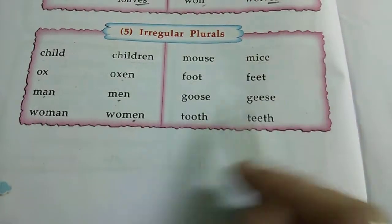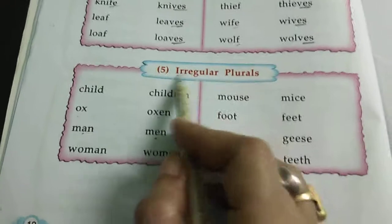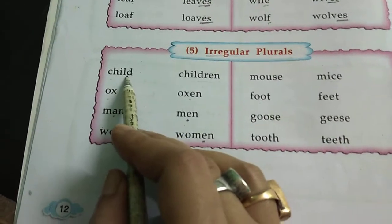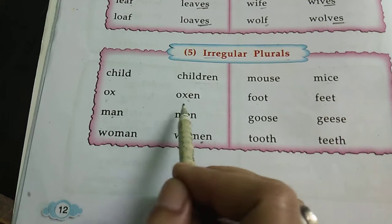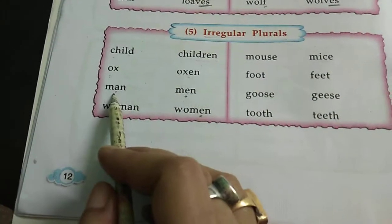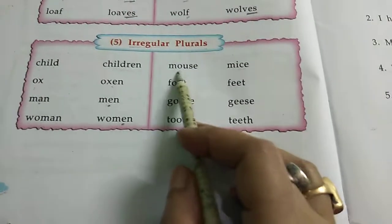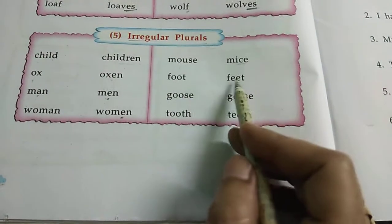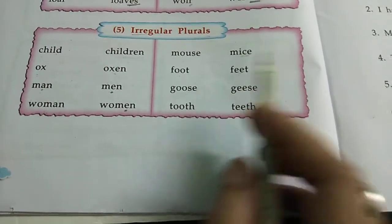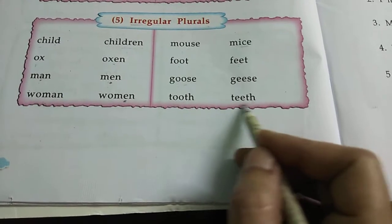You are not adding anything — you have to change the word. The words change by themselves, so these are irregular plurals. Child is one — children is many. Ox is one — oxen is many. Man is one — men is many. Woman is one — women is many. Mouse is one — mice is many. Foot is one — feet is many. Goose is one — geese is many. Tooth is one — teeth is many.